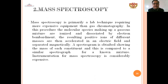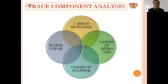Mass spectroscopy is another method. It is a primary lab technique requiring more expensive equipment than gas chromatography. The molecular species making up a gaseous mixture are ionized and dissociated by electron bombardment. The relative positive ions of different masses are then accelerated in an electric field and separated magnetically. A spectrogram is obtained showing the mass of each constituent, which is compared to a similar spectrograph for a known mixture. Instrumentation for mass spectroscopy is considerably expensive.